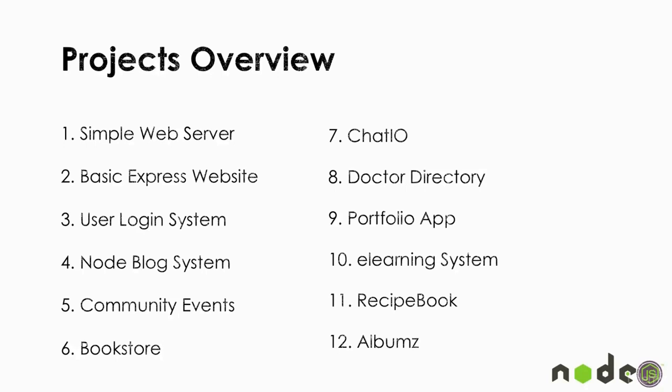Section 5 is a community events application using Drywall. Section 6 is a simple bookstore with PayPal checkout. Section 7 is a chat application using web sockets. Section 8 is a directory of doctors using Kraken. Section 9 is a portfolio application using MySQL. Section 10 is an e-learning system where students and instructors can log in to register and teach classes. Section 11 is a recipe book using PostgreSQL and Dust templates. Section 12 is an albums manager for performing CRUD operations on albums and categories.